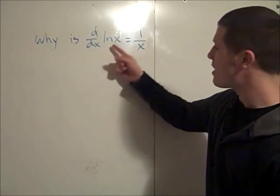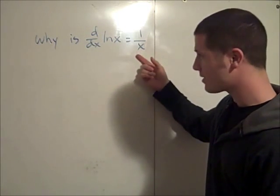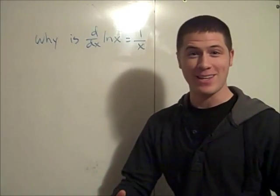Why is the derivative of the natural log equal to 1 over x? Let me tell you.